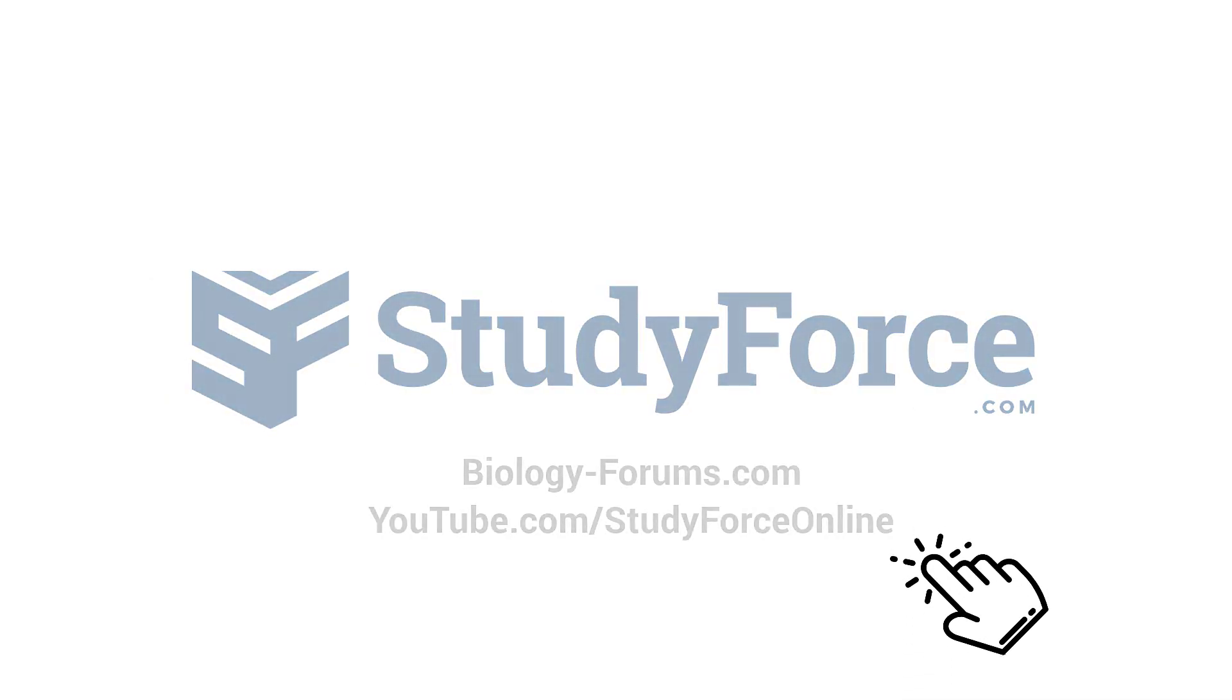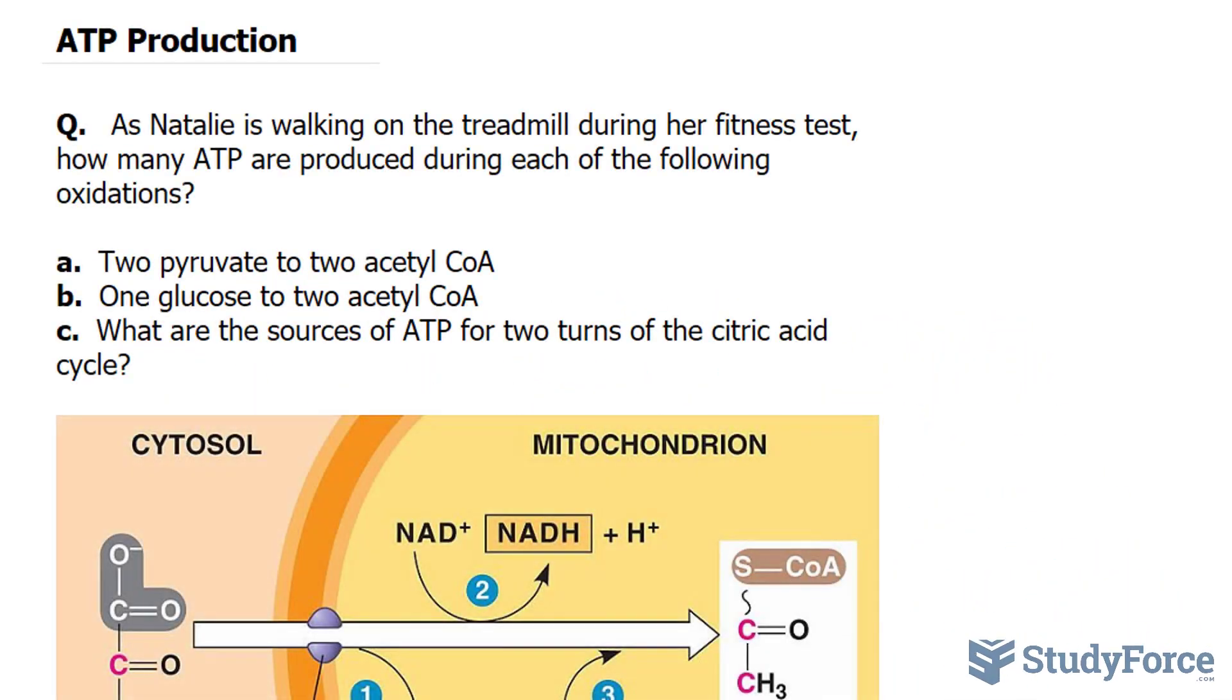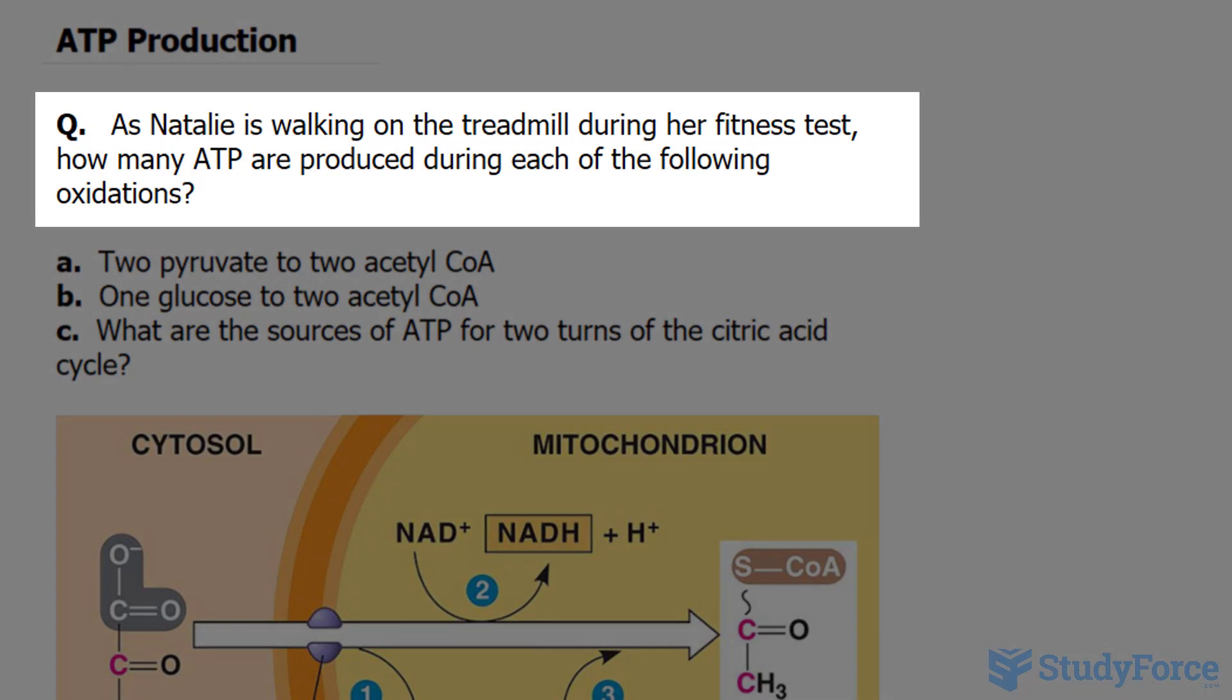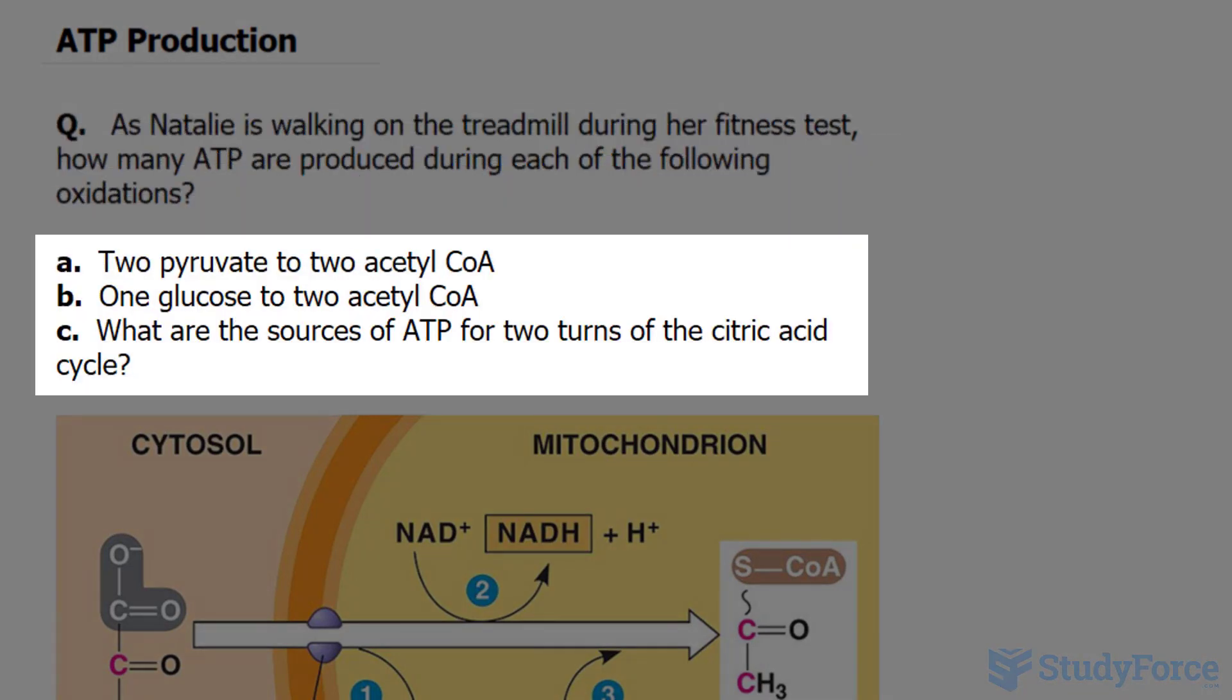In this lesson, we'll be discussing ATP production. The question reads: As Natalie is walking on the treadmill during her fitness test, how many ATP are produced during each of the following oxidations?